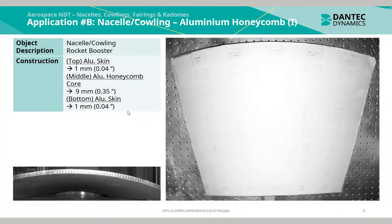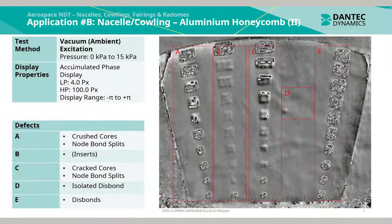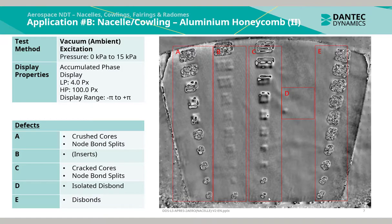This is a nacelle of a rocket booster. The construction is aluminium skin and aluminium honeycomb. Using vacuum ambient excitation, a pressure step from 0 to 15 kPa was applied. Multiple defects were detected: A is crushed cores and no-bond splits; B is inserts; C is cracked cores and no-bond splits; D is an isolated disbond; and E is disbonds.